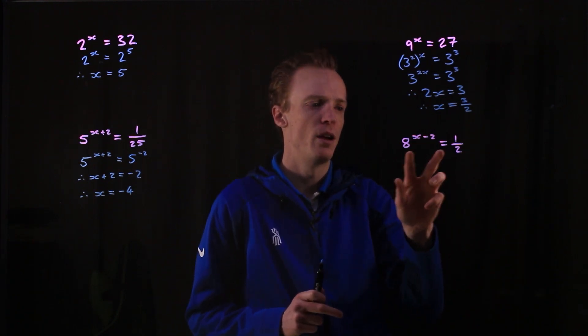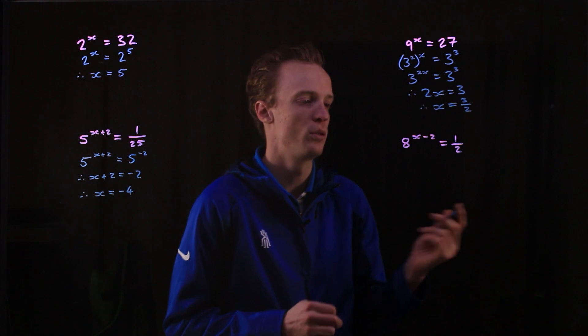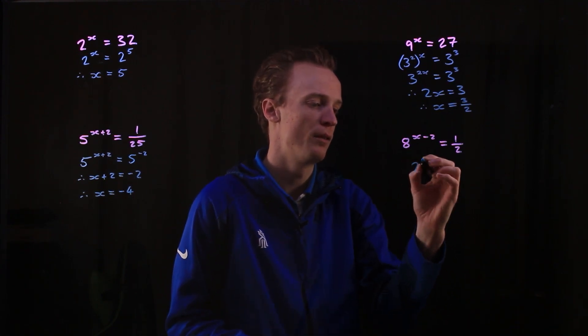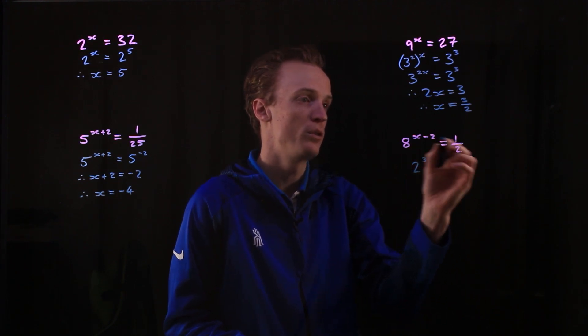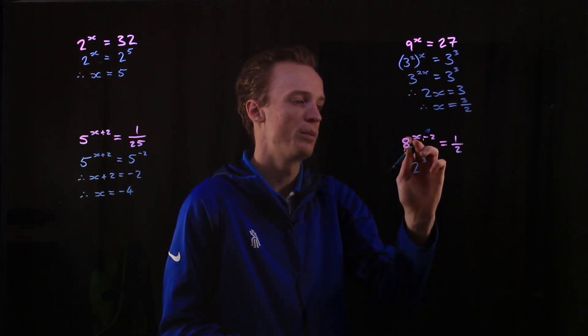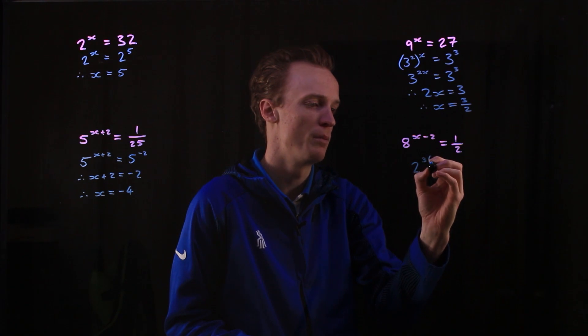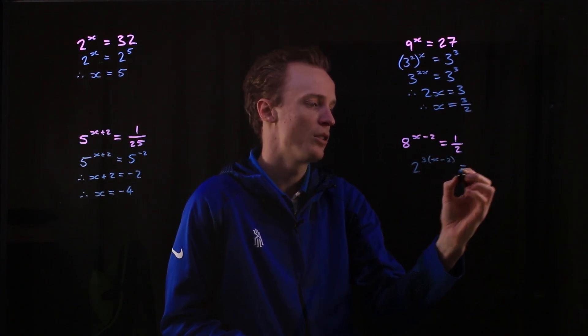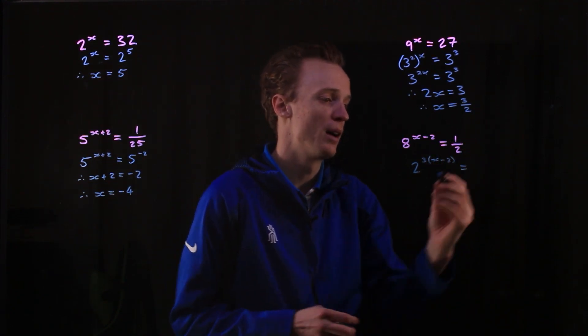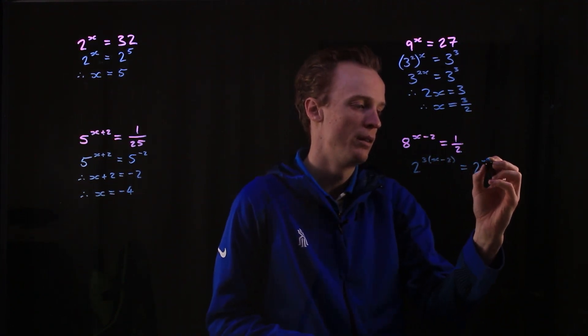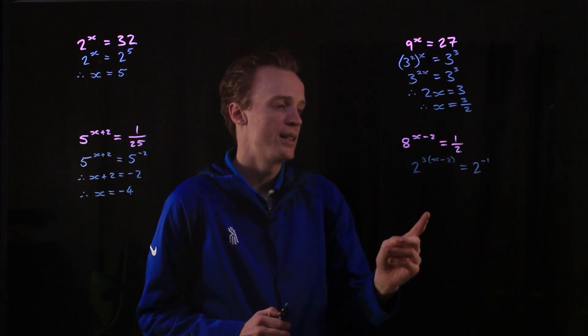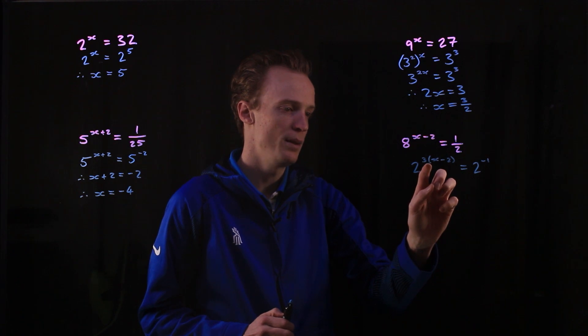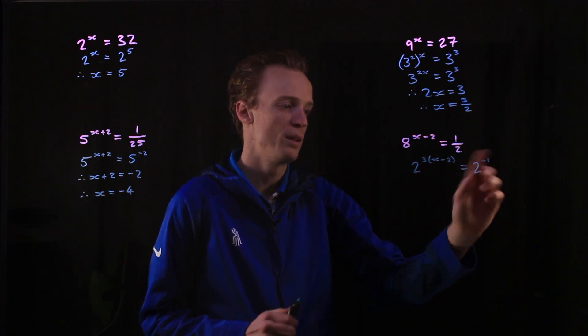This example here, I can rewrite both sides with a base of 2. So if I'm looking at doing that, this left-hand side becomes 2 to the power of 3, but that's got a multiplier. You can see here that it just needs to multiply with these here. So that'll be multiplying x minus 2. And on the right here, this is the same as saying it's 2 to the power of negative 1. So what I can now state here is, because I've got both sides with a power of 2, this 3 bracket x minus 2 must be equal to negative 1.